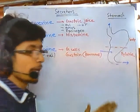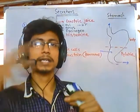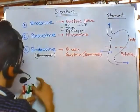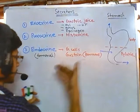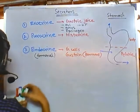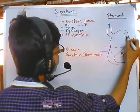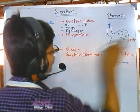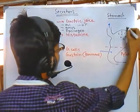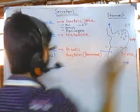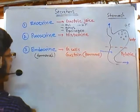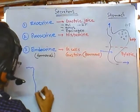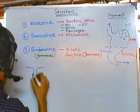Now, from where are these gastric juices secreted? They are secreted from specialized cells present in the wall of the stomach. The stomach wall is curved and has many gastric pits. If we look at a cross-section of the stomach wall, we can see small hole-like openings that go deep inside — these are called gastric pits.